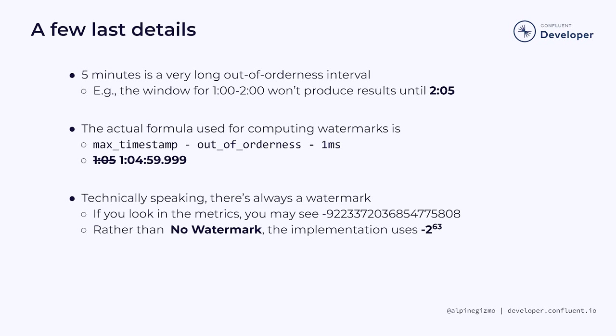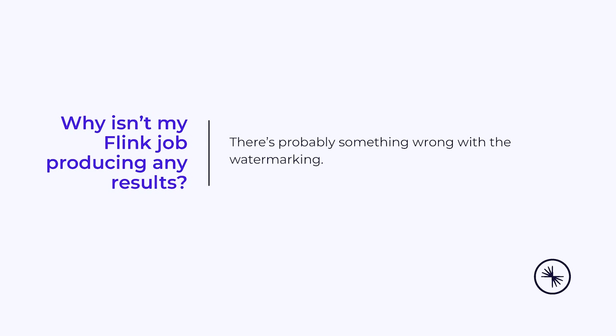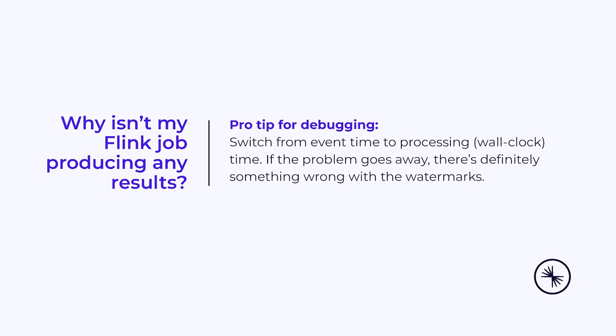I took you through this detailed example so that we can now talk about the most common troubleshooting question on the Flink forums: why isn't my Flink job producing any results? 99 times out of 100, the answer has something to do with watermarking. If you want to do a quick sanity check, simply switch your job from event time to processing time. If your job now produces results, you know for sure that the watermarks are the root cause of the problem. When you use processing time semantics, there's no need for watermarking.